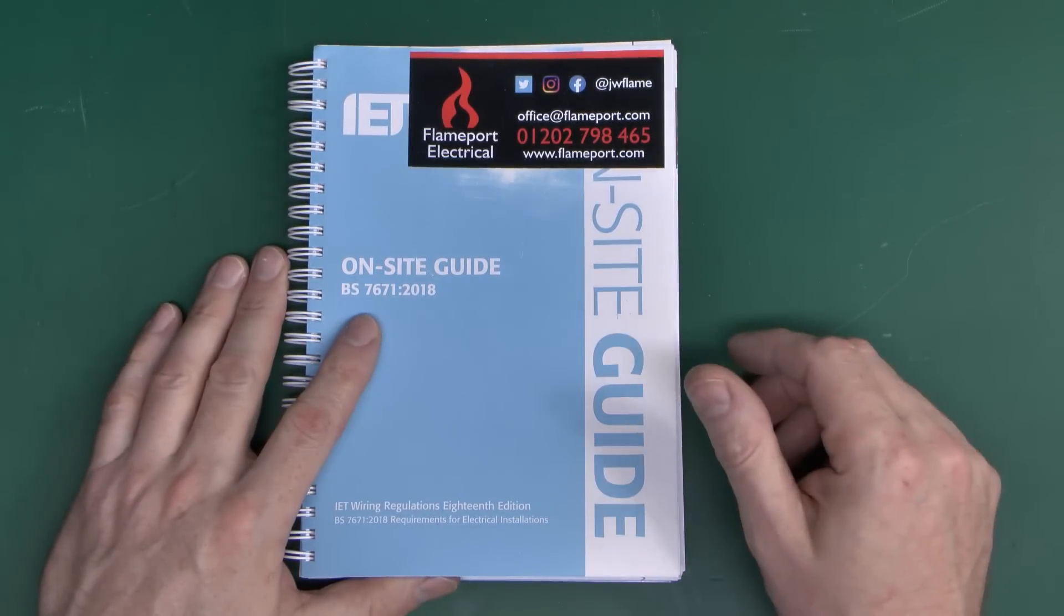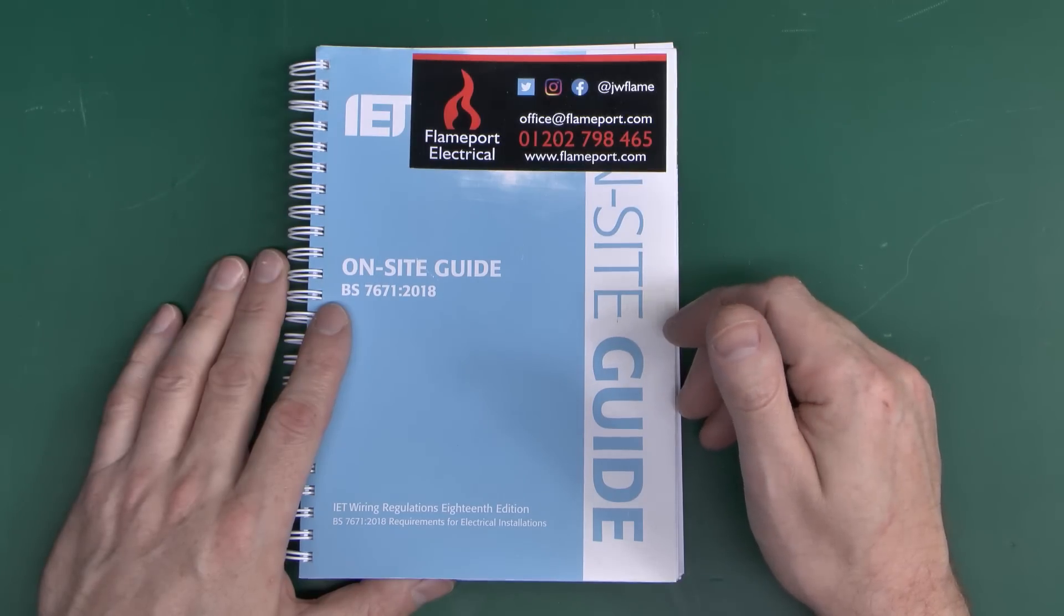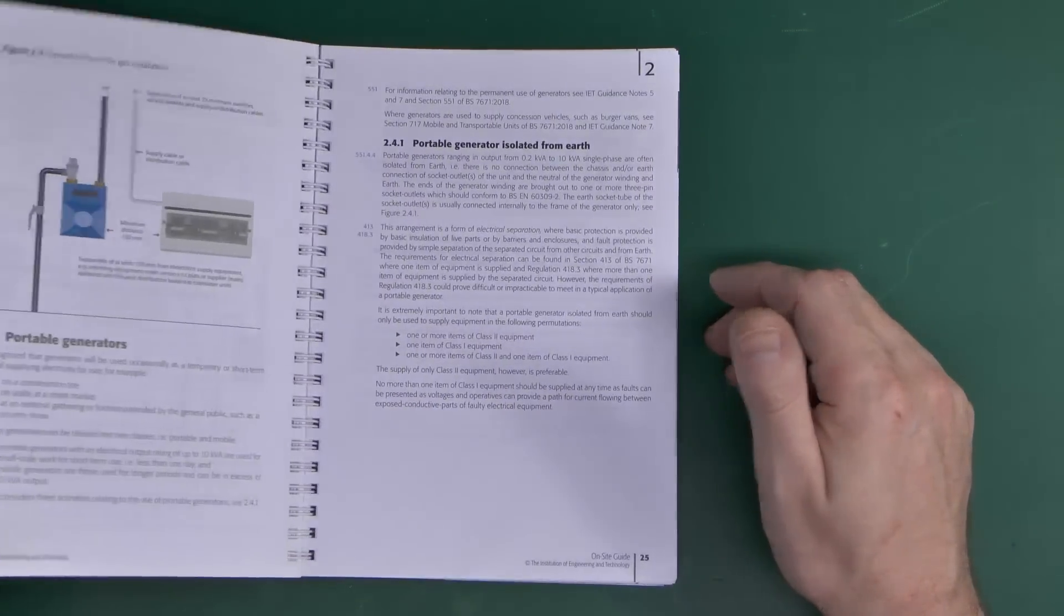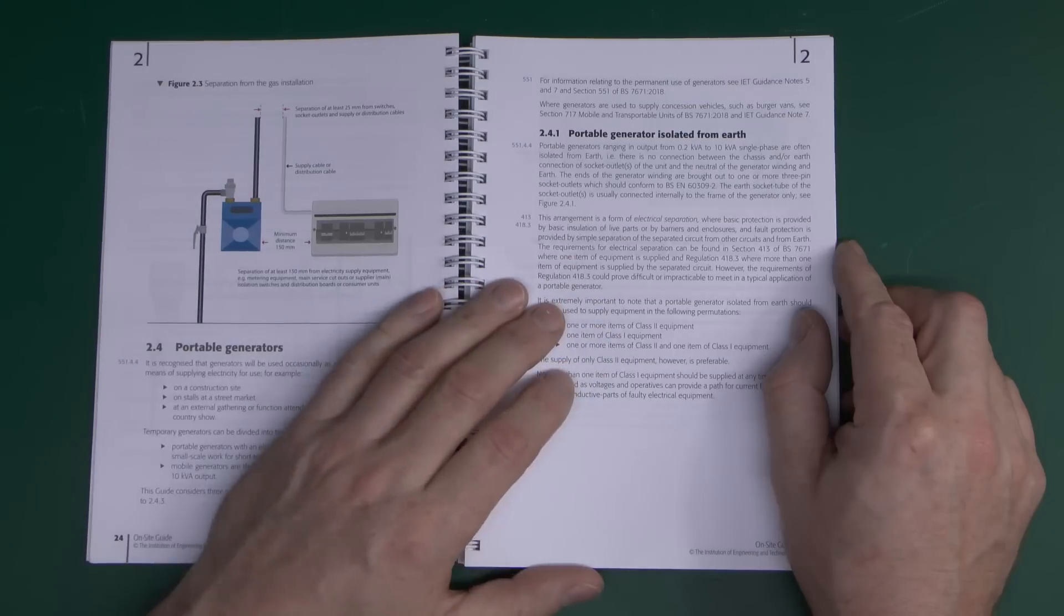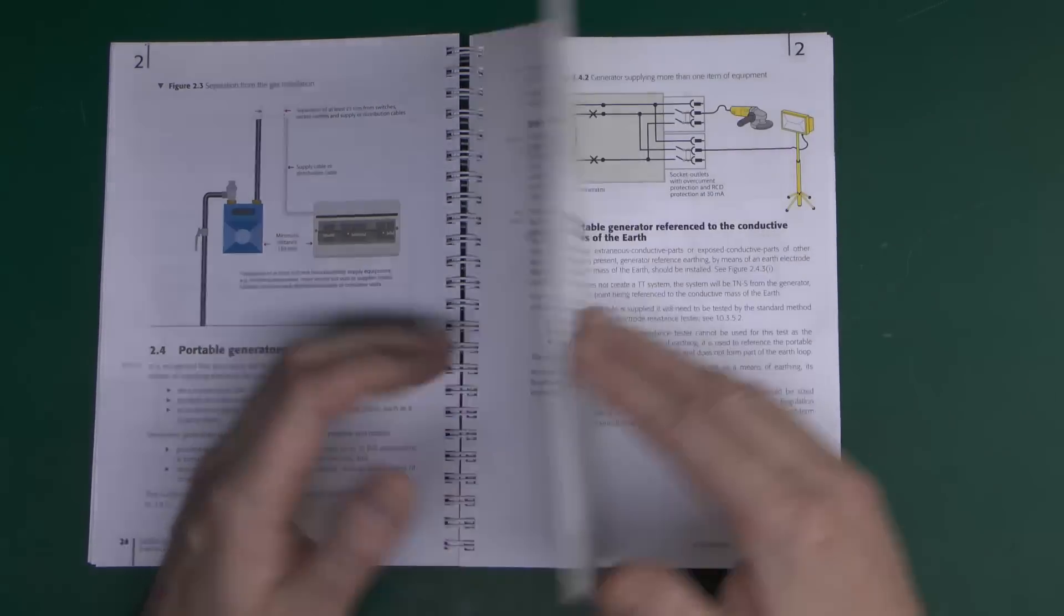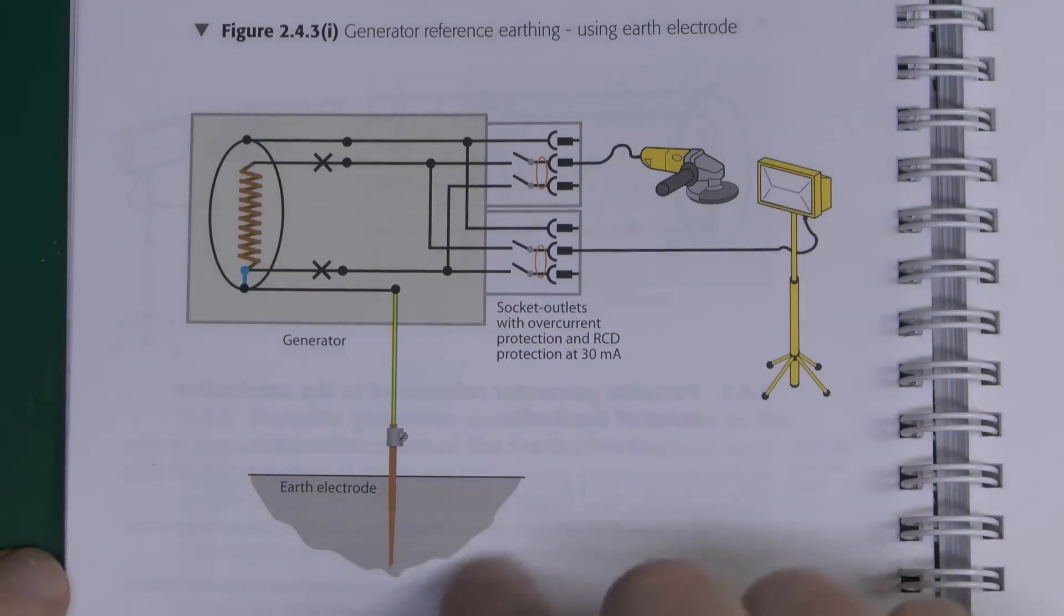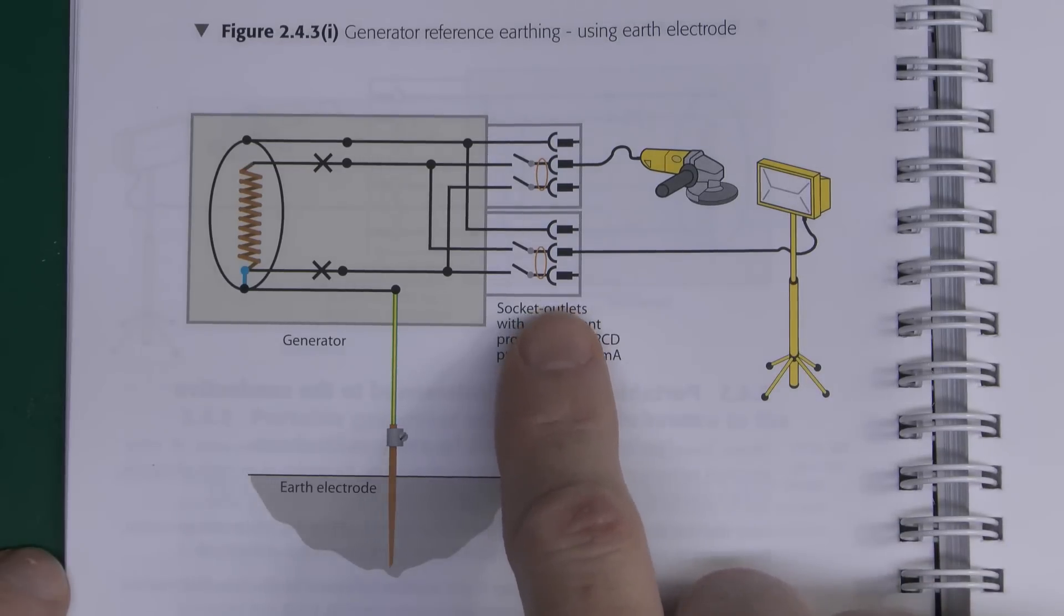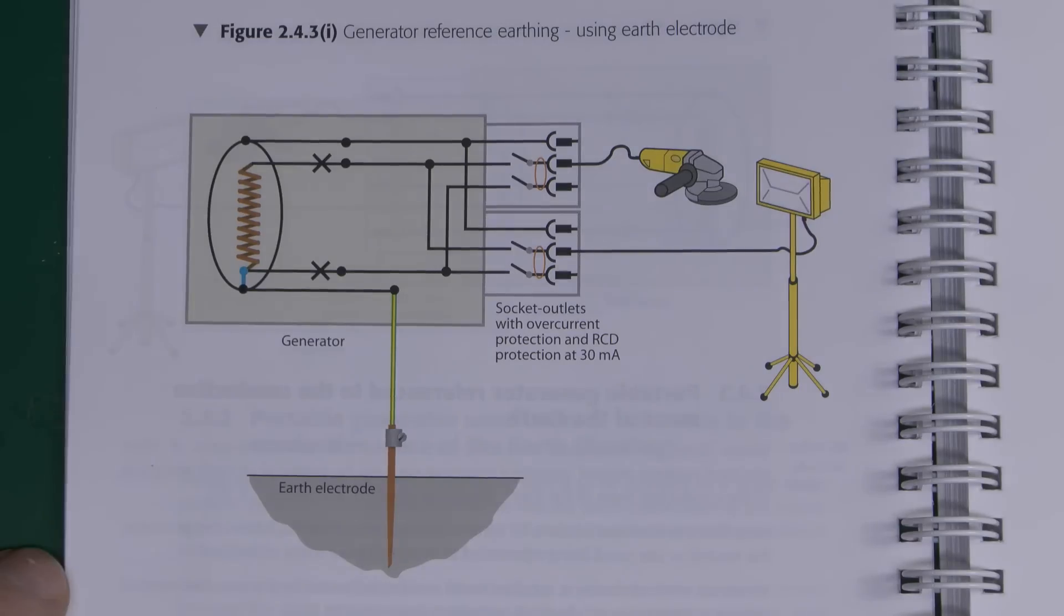Now if you can't remember all that about generators then you can actually find information on it in this on-site guide here. This is the one that's in use at the time of making this video. So inside here in section two, surprisingly enough there's a whole section here about portable generators, and there's a bit there about the one isolated from Earth and the not connecting lots of bits of equipment to it. And then on the other side you've got the one where it's actually referenced to Earth. So in this diagram here we can see it's the TNS arrangement, got a couple of socket outlets here, line neutral and then the Earth connection. That basically goes back to the metal frame of the generator. You can see in there the link between the neutral and the generator frame or the Earth connection. And then we have our reference Earth electrode there, just going into the Earth itself.